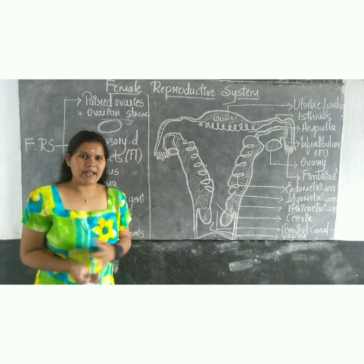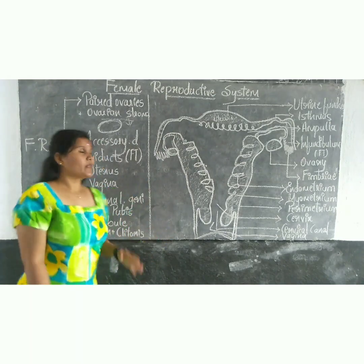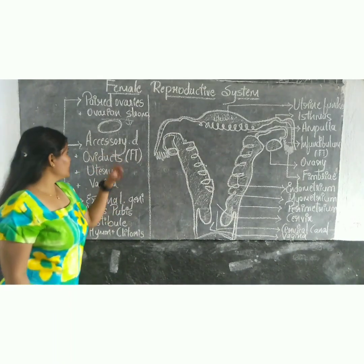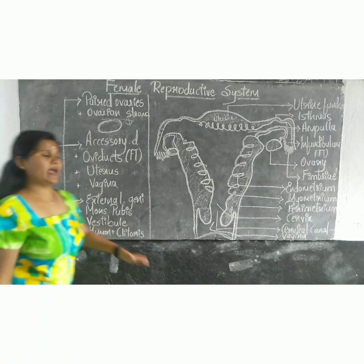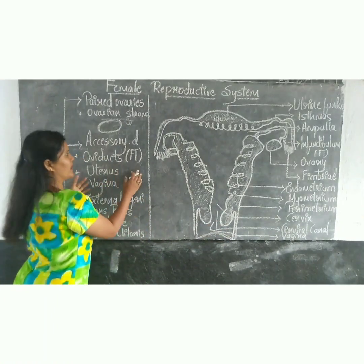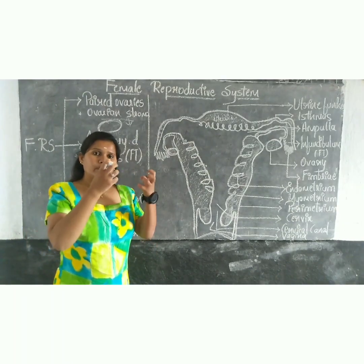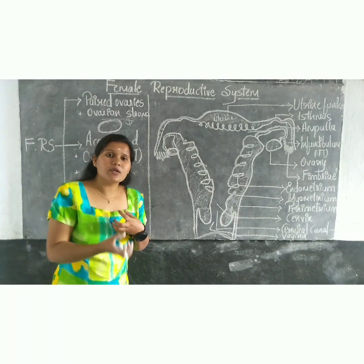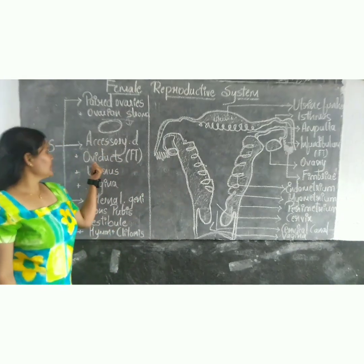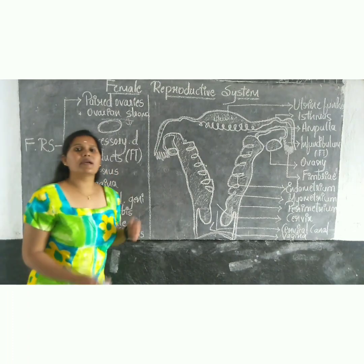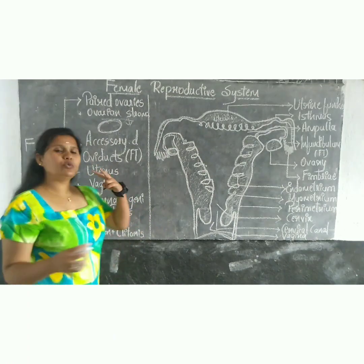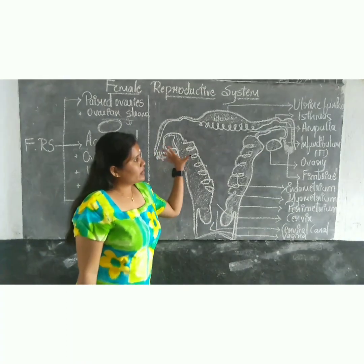Please go through the structure of the ovary in your textbook or search online for detailed information. Coming to the accessory ducts, these include the oviducts, which provide a path for the connection and the process of ovulation. They are also called the fallopian tubes, and there are two of them.